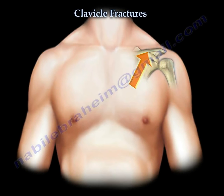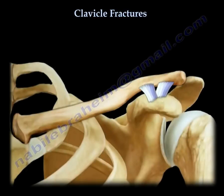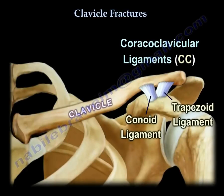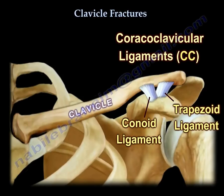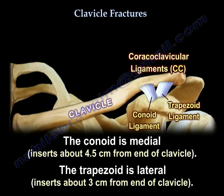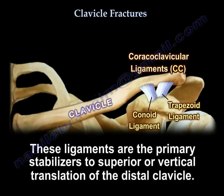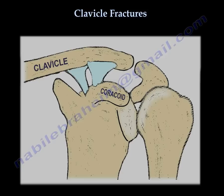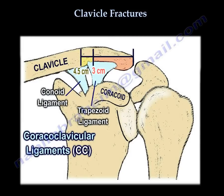In clavicle fractures, you want to know about the ligaments that support the clavicle — the CC ligaments, or coracoclavicular ligaments. There are two ligaments: the conoid, which is medial, about four and a half centimeters from the end of the clavicle, and the trapezoid, which is lateral, about three centimeters from the end. These are the primary stabilizers to superior vertical translation of the distal clavicle. Here you can see the insertion of these ligaments on the inferior surface of the clavicle.